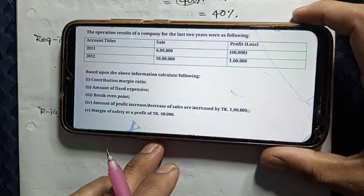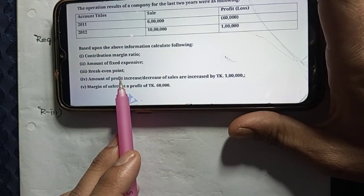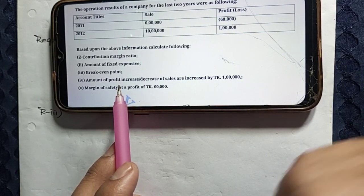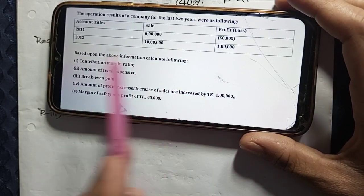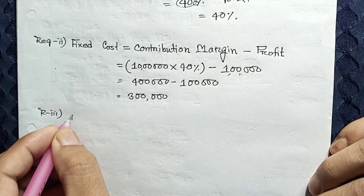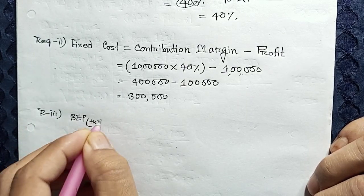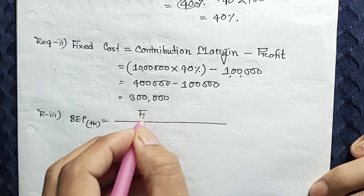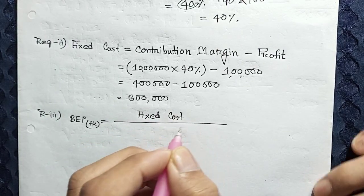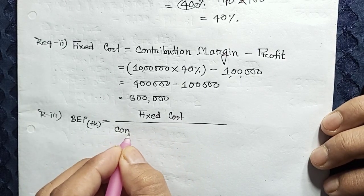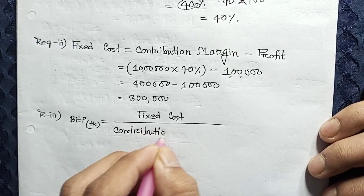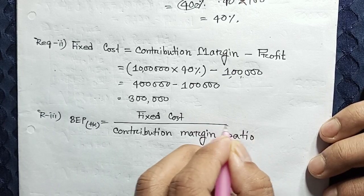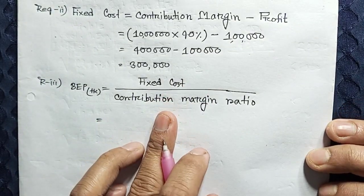Requirement 3 is the Break-Even Point. Break-Even Point in Taka (BEP in currency) — the formula is: BEP (Taka) = Fixed Cost divided by Contribution Margin Ratio. F-I-X-E-D C-O-S-T divided by Contribution — C-O-N-T-R-I-B-U-T-I-O-N — Margin — M-A-R-G-I-N — R-A-T-I-O — Contribution Margin Ratio.